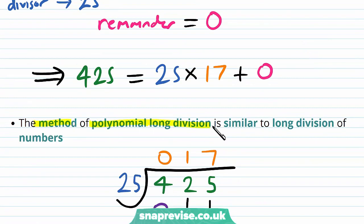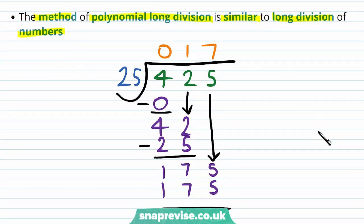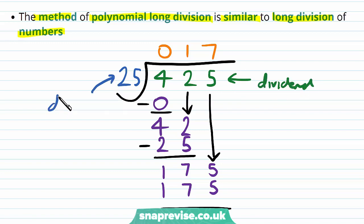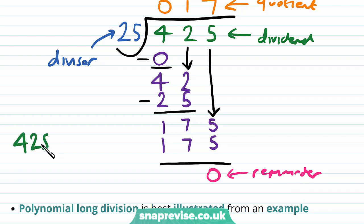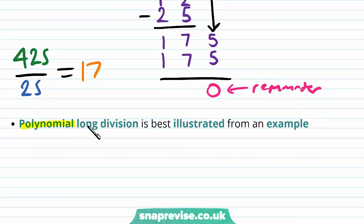The method of polynomial long division is similar to the long division of numbers. This is the polynomial long division for 425 divided by 25. We have our dividend, the 425; we have our divisor, the 25; and we have the quotient, our 17. Then as a result we get a 0 remainder, and we can deduce that 425 ÷ 25 = 17 from this long division. Polynomial long division is best illustrated from an example.